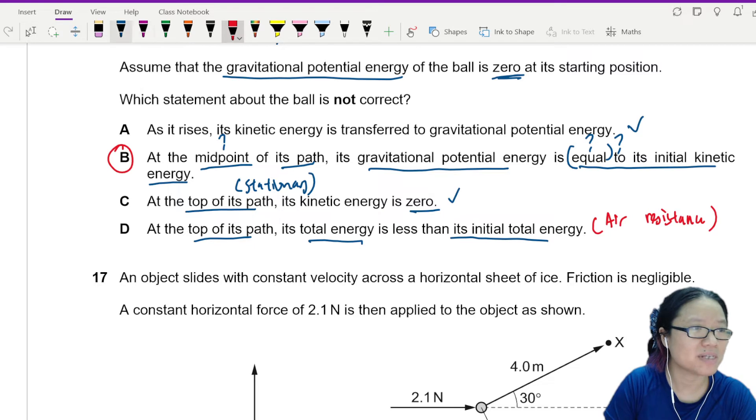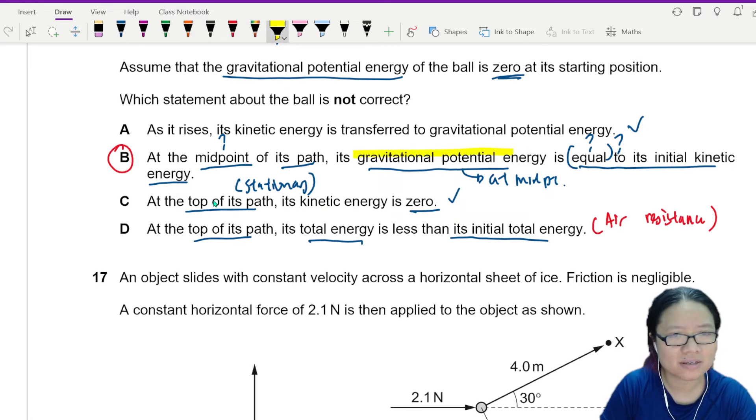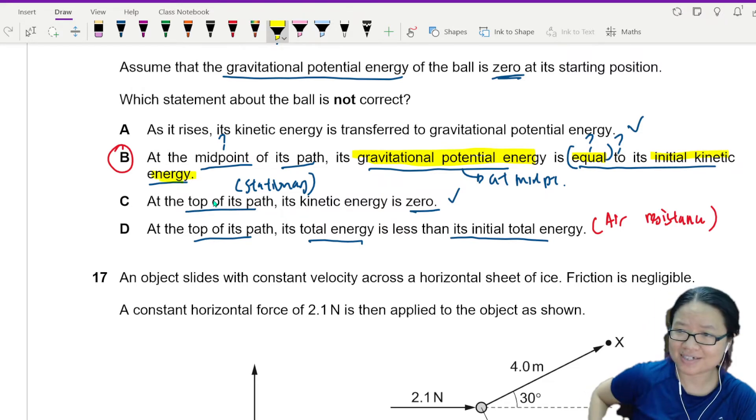Kinetic energy is not exactly half. So this means that at midpoint, the GPE is equal to the initial kinetic energy. Cannot be.